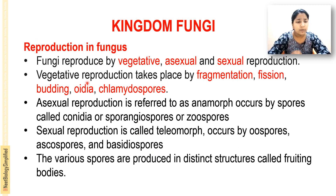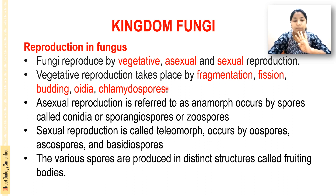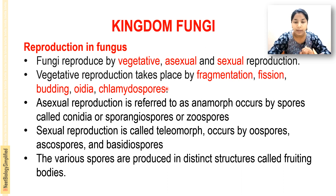Next is reproduction in fungi. There are three types: vegetative, asexual, and sexual reproduction. In vegetative reproduction, it takes place by fragmentation, fission, budding, oedia, and chlamydospores — five types. Asexual reproduction is referred to as anamorph, occurring by spores called conidia. Sexual reproduction is called telomorph.